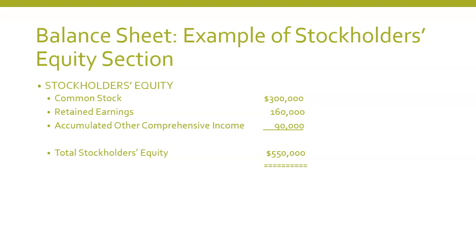On the balance sheet, in the stockholders' equity section, we show the common stock — including shares authorized, issued, and outstanding — retained earnings of $160,000, and the accumulated other comprehensive income. If we didn't show this, we wouldn't balance on the balance sheet, because over the years we've added $90,000 to the asset section and need a corresponding entry in stockholders' equity.